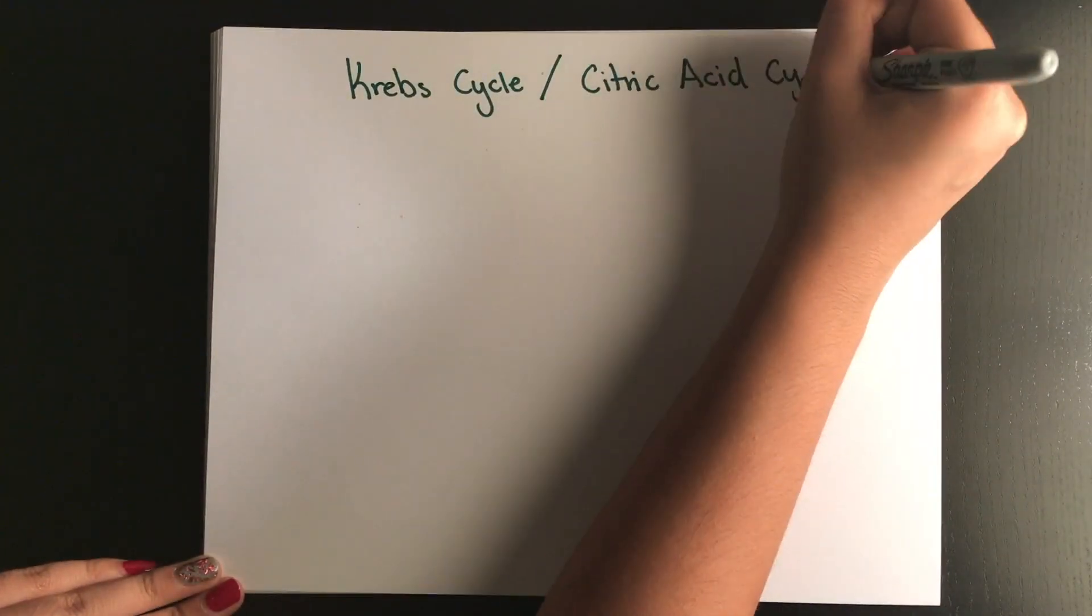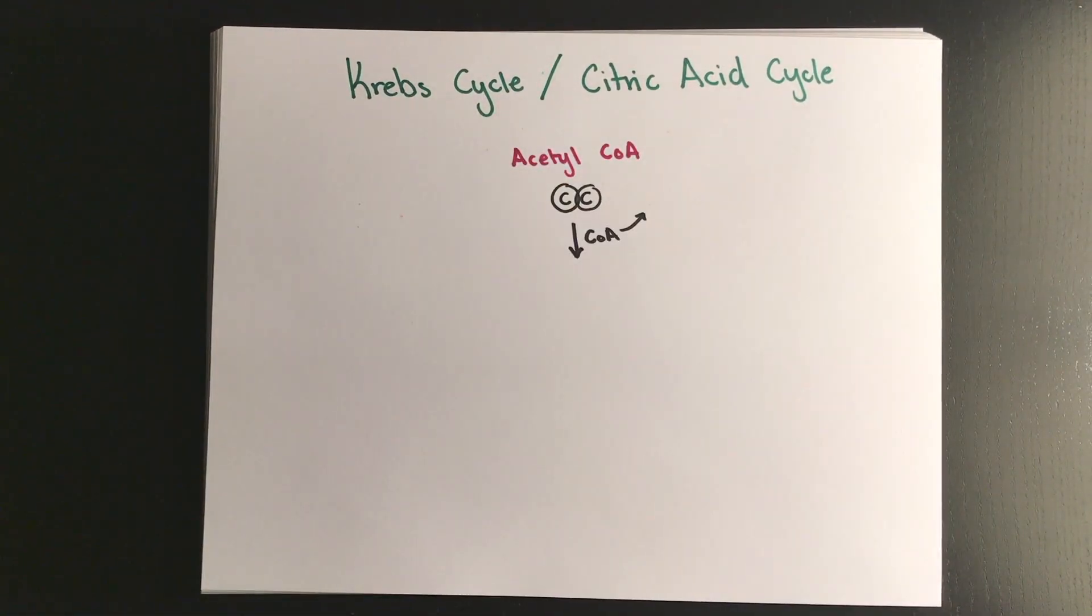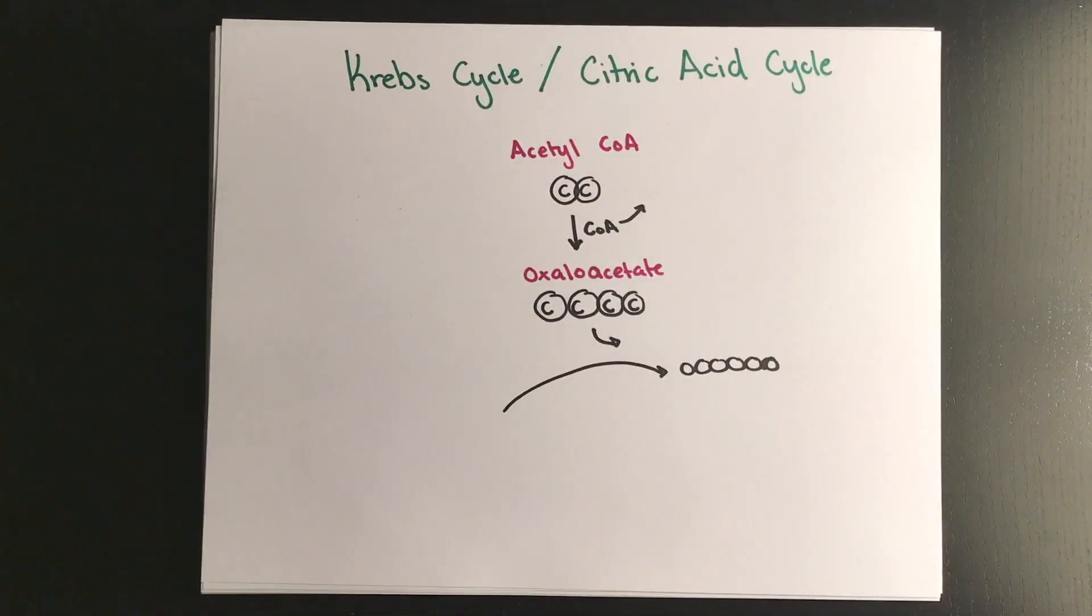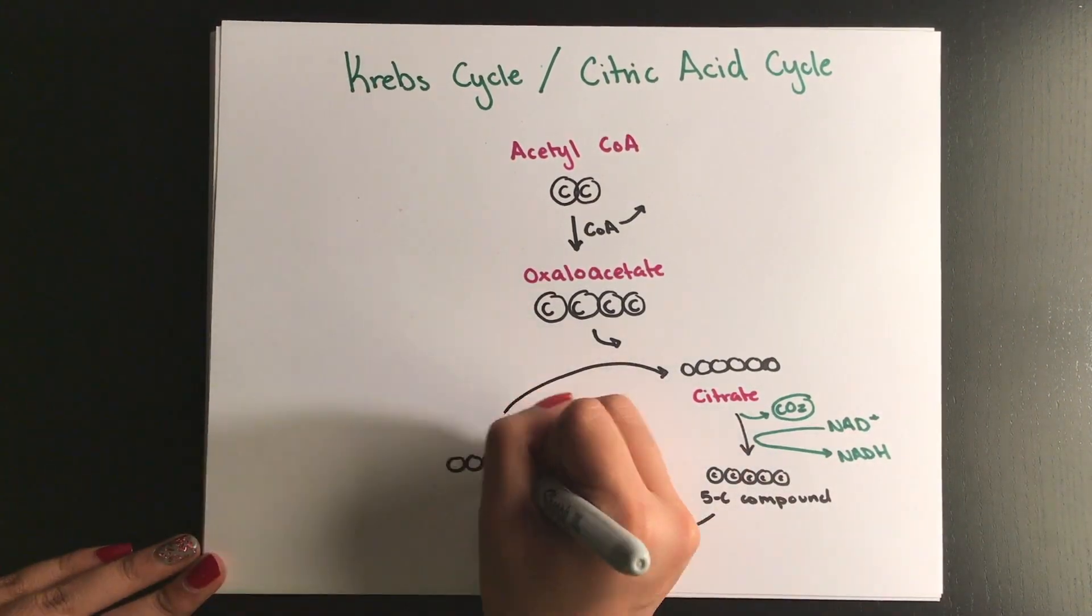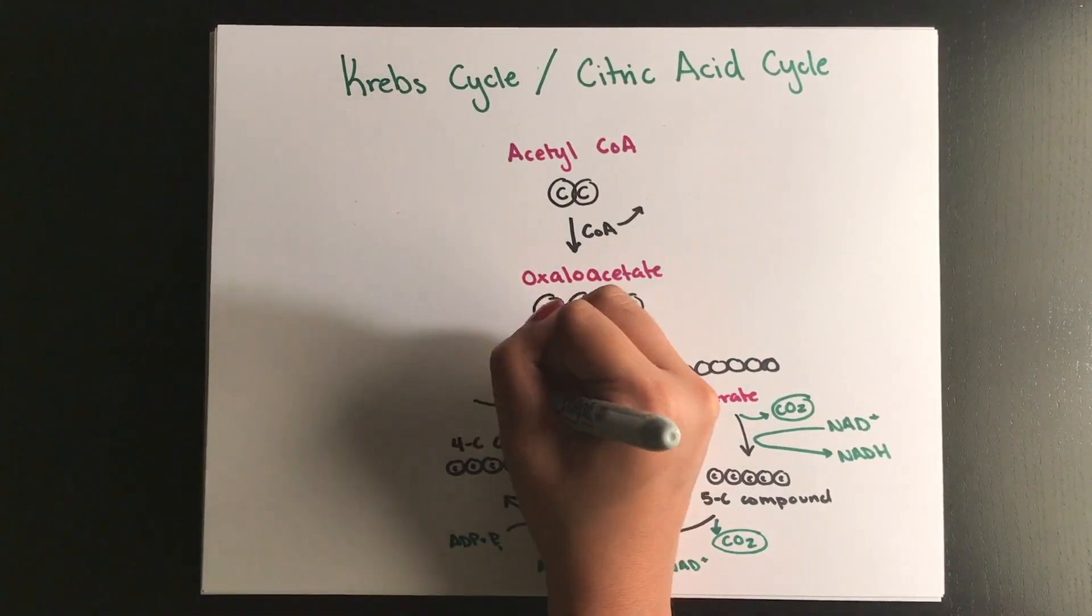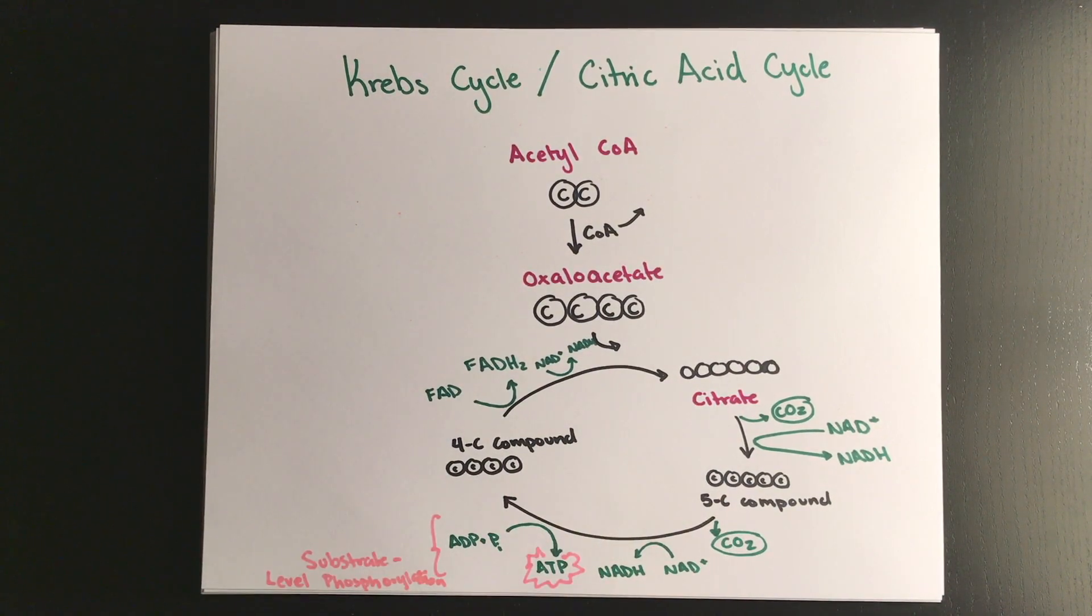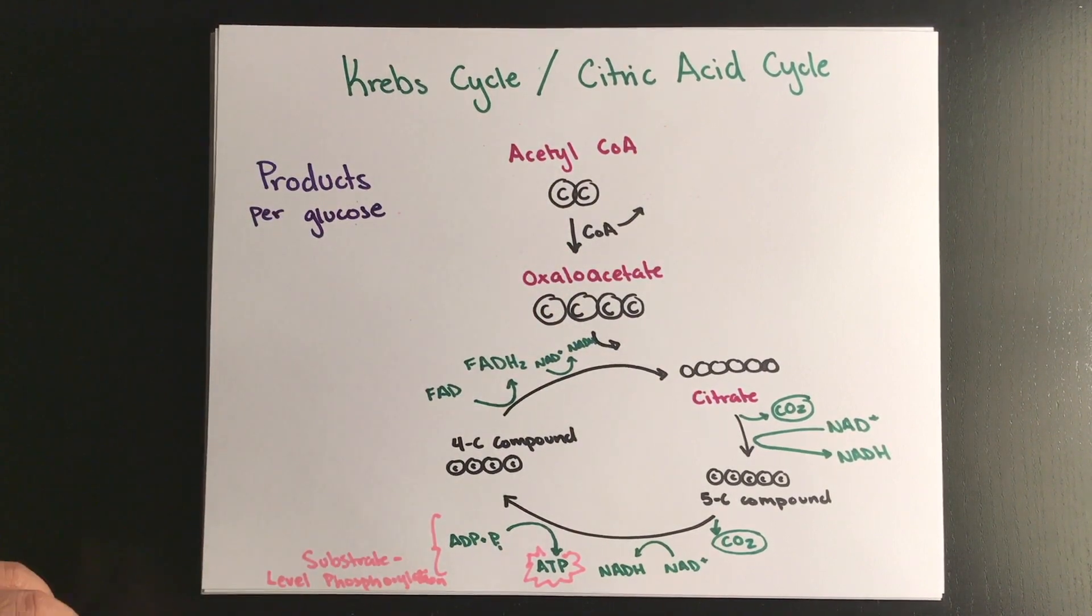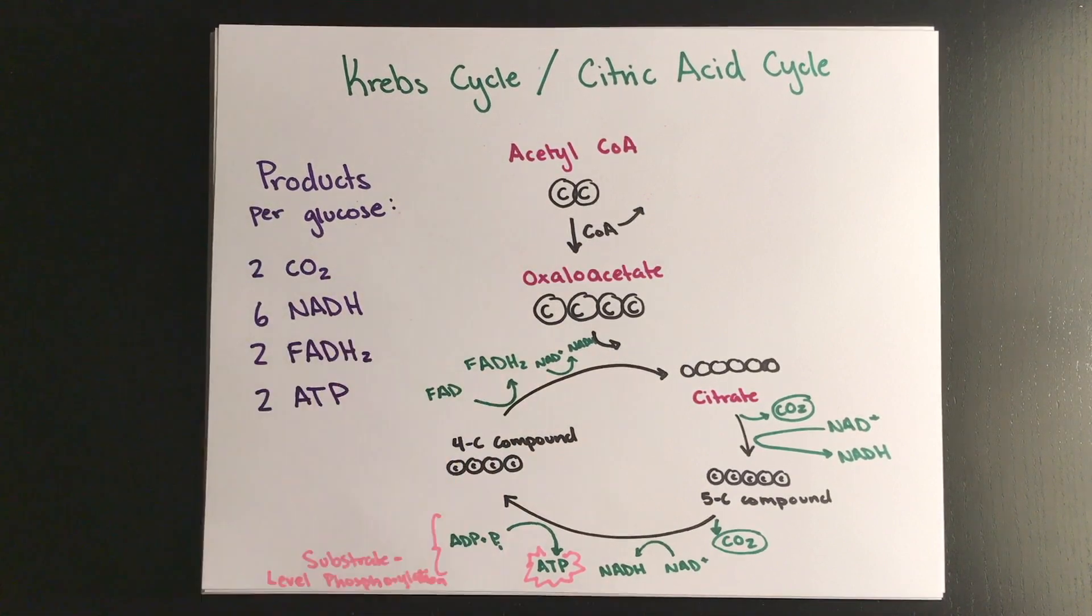Next we'll move on to the Krebs cycle or what's also known as the citric acid cycle. Just like the PDC, the Krebs cycle runs twice for each glucose molecule made because we have two pyruvate and it requires oxygen meaning that it's aerobic. Acetyl-CoA is first combined with oxaloacetate to form citric acid which is then broken down one carbon at a time and rearranged to form the original oxaloacetic acid molecule. Per glucose in the Krebs cycle, two molecules of carbon dioxide are produced, six molecules of NADH, two molecules of FADH2, and two molecules of ATP.